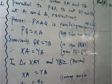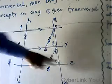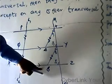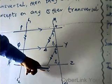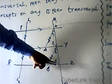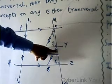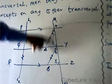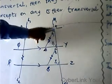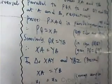So in triangle XAY and triangle YBZ, we see that XA equals YB — that is the corresponding side. We see that these triangles are similar. Not only that, this angle and this angle are the same, and this angle and this angle are also the same. So we have angle-angle and a side — meaning triangle XAY and triangle YBZ are congruent under the angle-angle-side (AAS) rule.